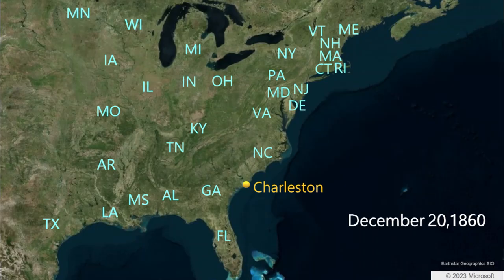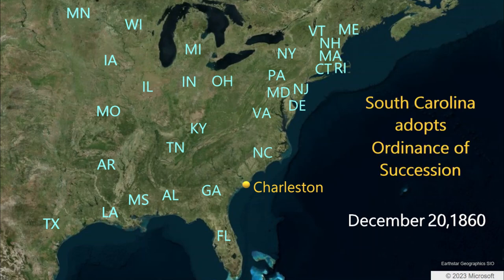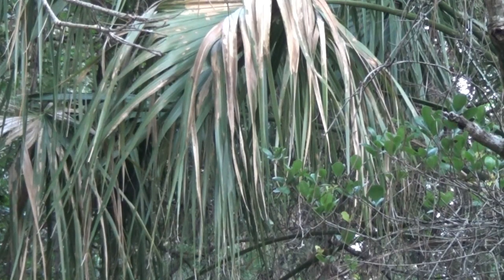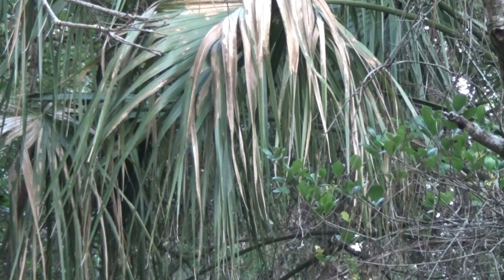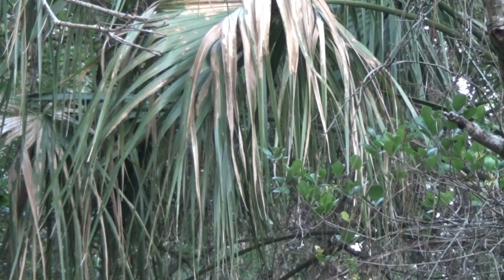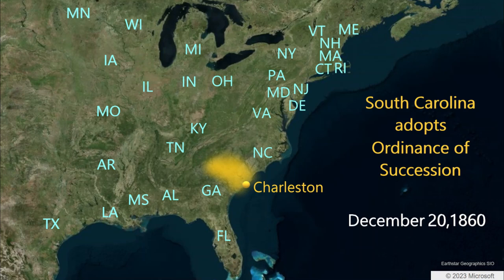December 20th, in Charleston, South Carolina's convention adopts an ordinance of secession — a unanimous decision of 169 to 0. The ordinance repeals South Carolina's ratification of the United States Constitution. Thus, South Carolina officially secedes from the United States of America. From the perspective of South Carolina state government, South Carolina is now an independent nation — the so-called Palmetto Republic.